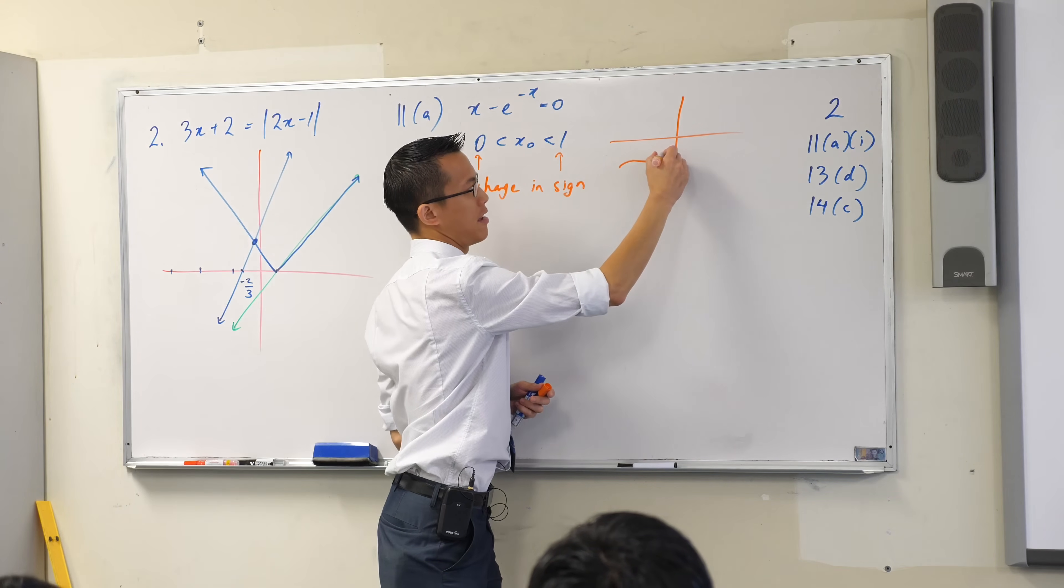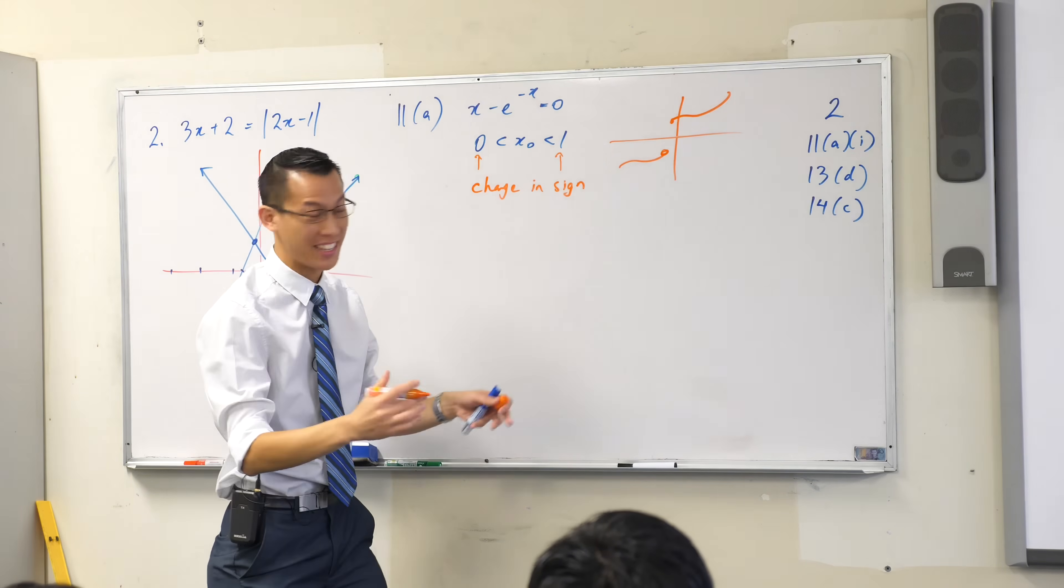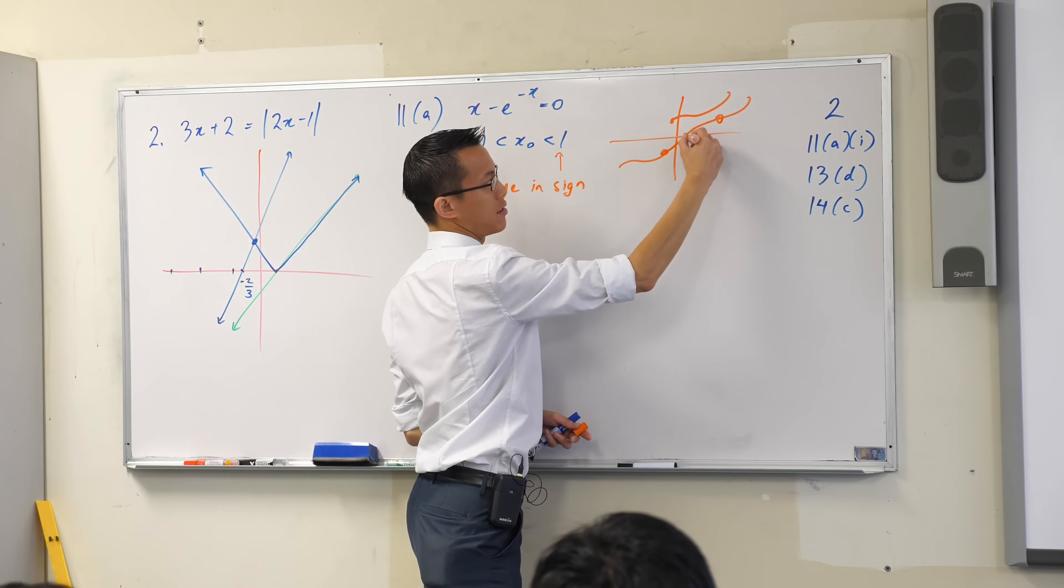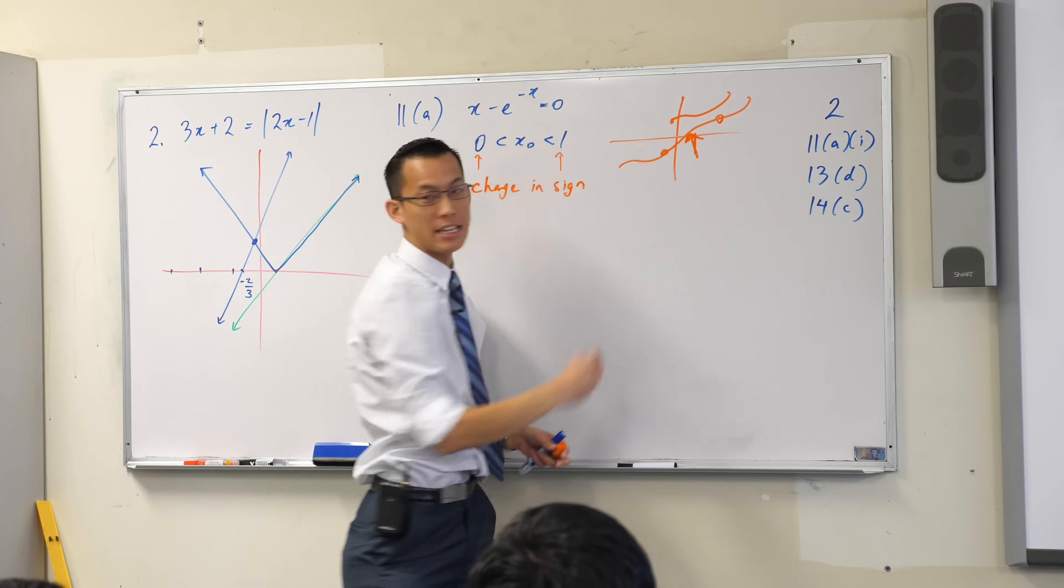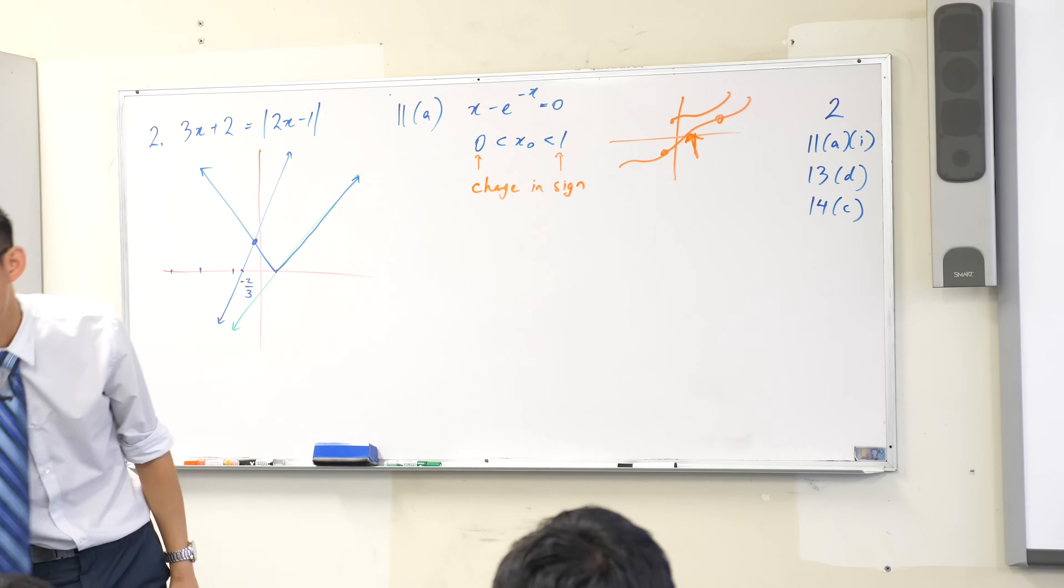So somewhere in between, it's not going to do something like this. I'm negative down here, and then I've got a hole, and then now I'm positive. Okay, it's actually continuous. It's going to do something more like this. So somewhere in between here, it's going to cross. That's what we mean by an x-intercept.